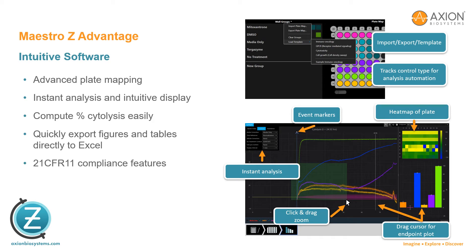The AXIS-Z software provides a straightforward approach to the setup, execution, and analysis of impedance experiments. Easily referenced color-coded plate maps provide all the information about the experiment and track control types for automation of the analysis. Assay setup is made easy with automatic acquisition and pre-configured settings for analysis. Impedance data are continuously displayed for each treatment group across the plate in real time, and to compare treatment groups at any time, simply drag the cursor over the plot.